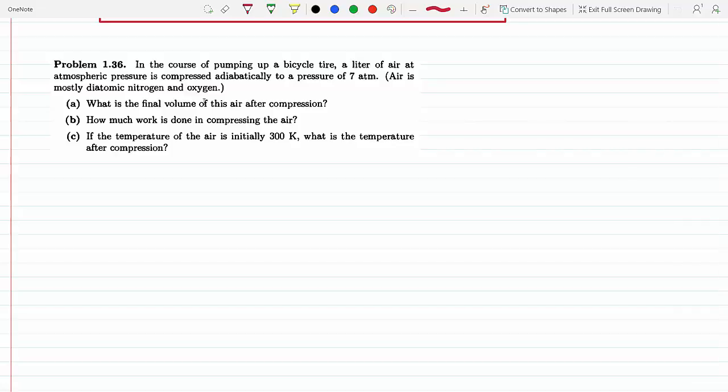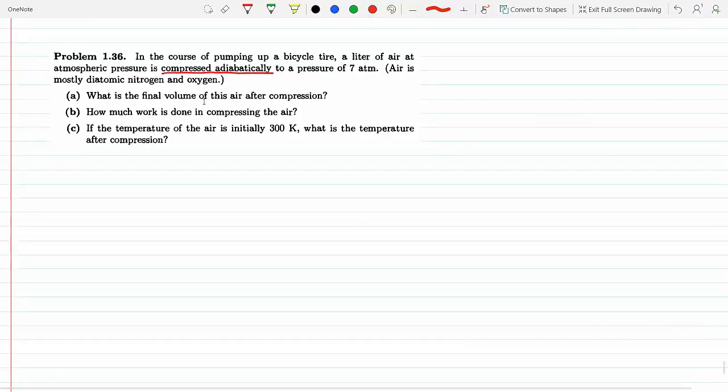Since this is adiabatic compression, we know we've derived in the section that P times V to the gamma, or V to the gamma times the pressure, remains the same.